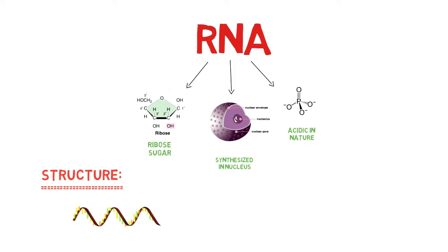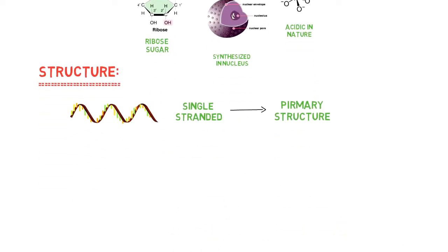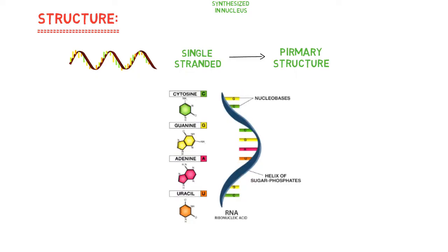Mostly, RNA has single-stranded structures. It is called its primary structure. It has a sugar phosphate chain along which nucleotides are arranged. It has four nucleotide bases: adenine, cytosine, guanine, and uracil.